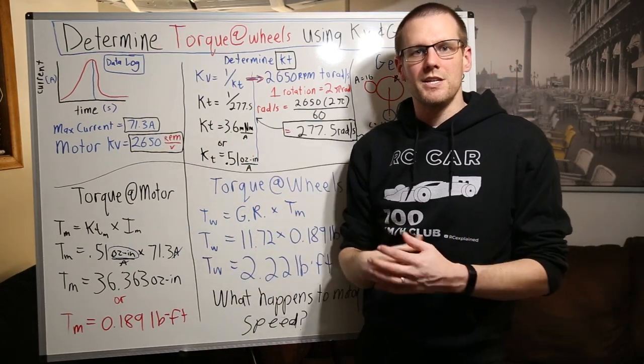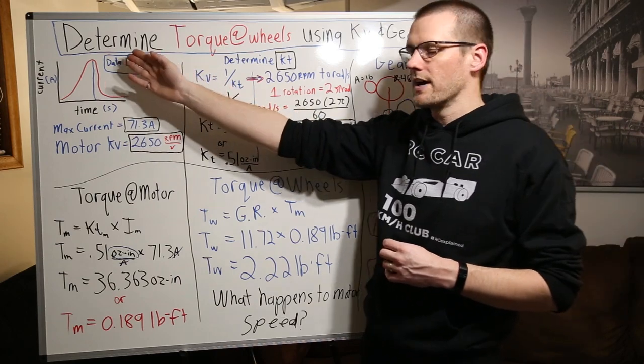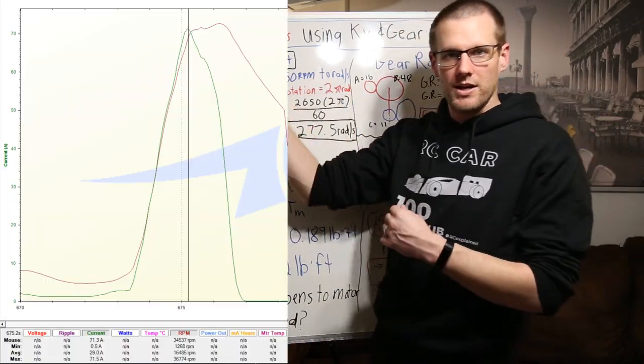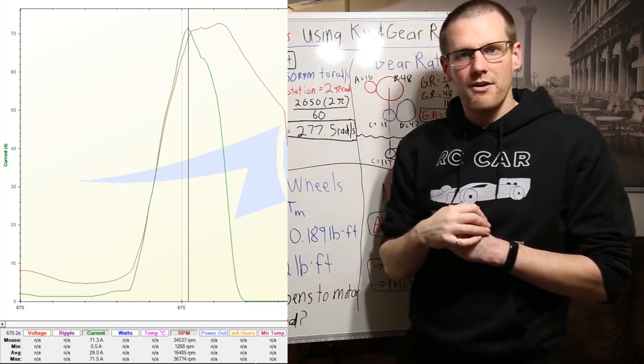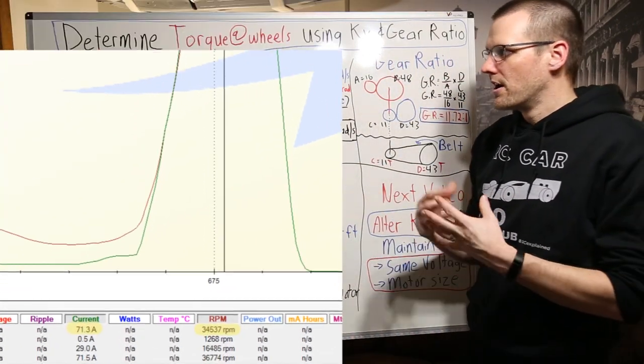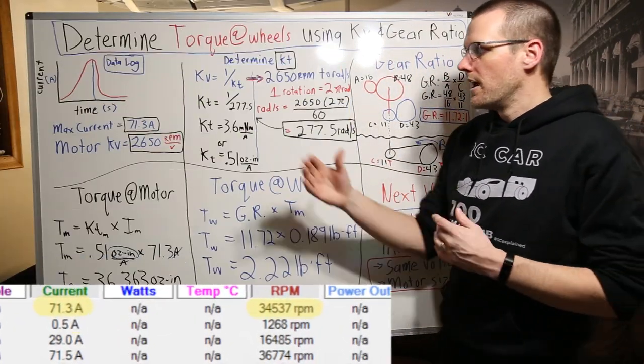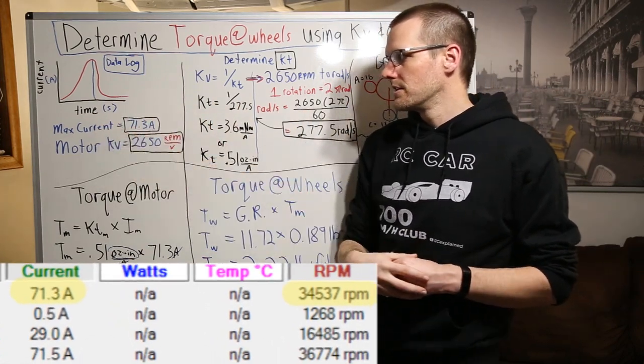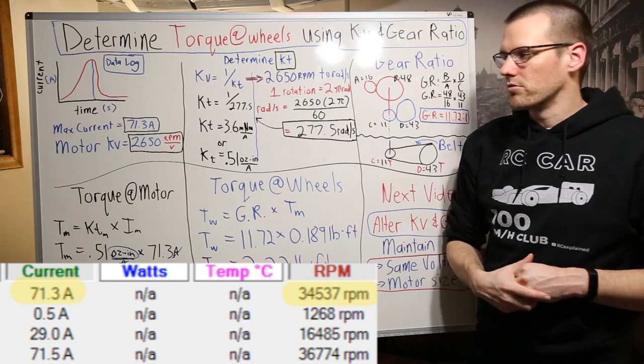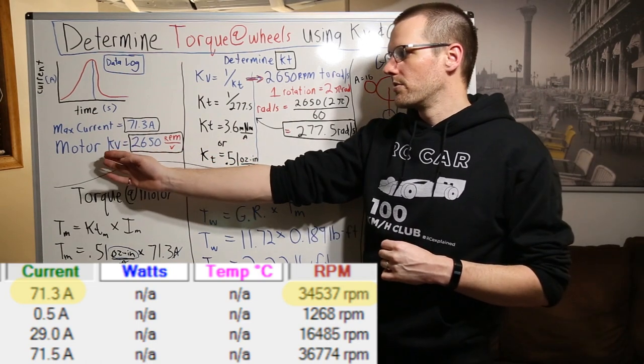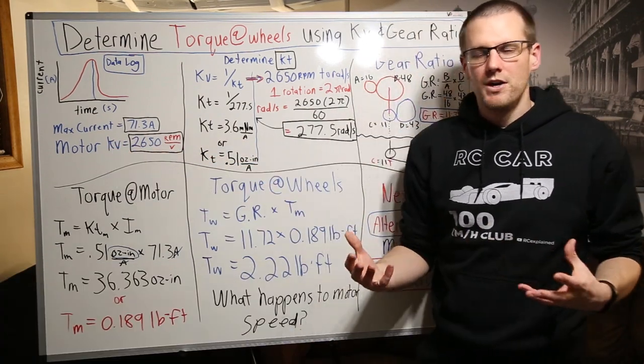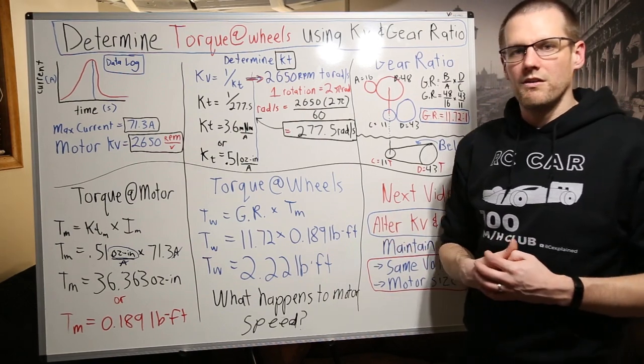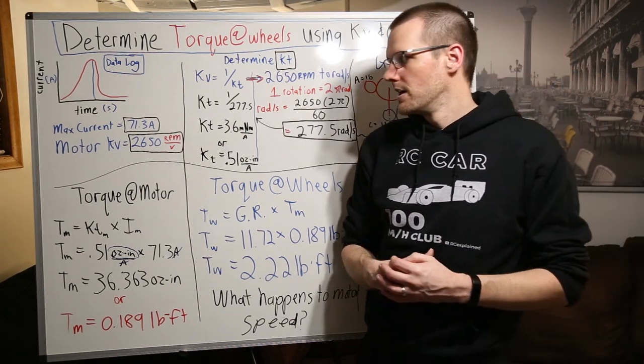And this sort of repeats itself. Now you can take a value anywhere on that curve and you can determine what the torque output is. This is what I took from a graph on a 1.8 scale buggy. And what we end up doing here is we're gonna go ahead and determine the max current from that, which is 71.3 amps. And we also look at the motor that we're using. And it happens to have 2650 RPM per volt. That's our KV value that we use for this example.